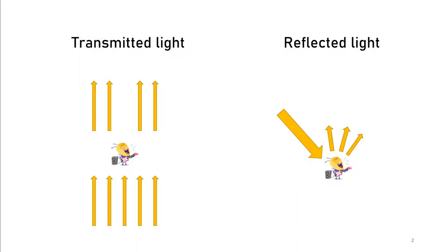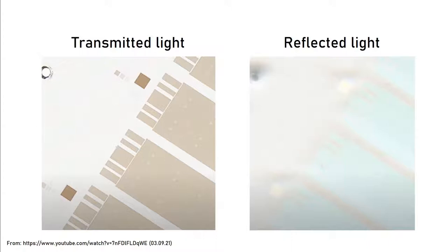But sometimes you don't have a transparent sample. For example, if you want to see the surface of a metal like aluminum, then you use reflected light to do that. The light beam hits the sample and gets reflected depending on the surface structure.